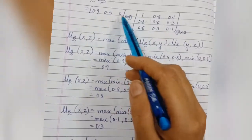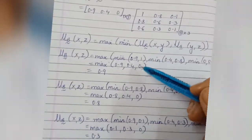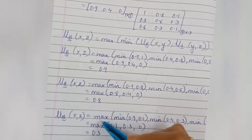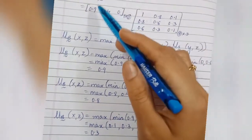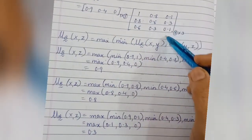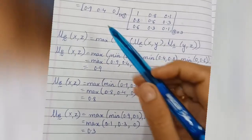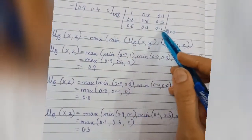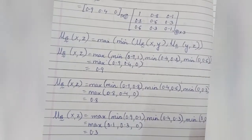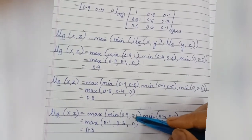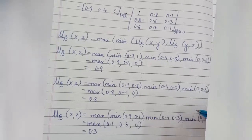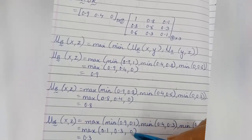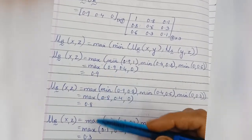For the third element, take the same row and the third column. μ_B(x, z) = max{ min(0.9, 0.0), min(0.4, 0.3), min(0, 0.1) }. Taking minimums: 0.0, 0.3, 0. After taking minimums, the next step is to take the max — max of these three is 0.3. So the third element is 0.3.